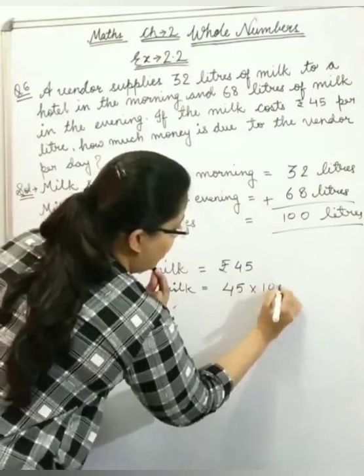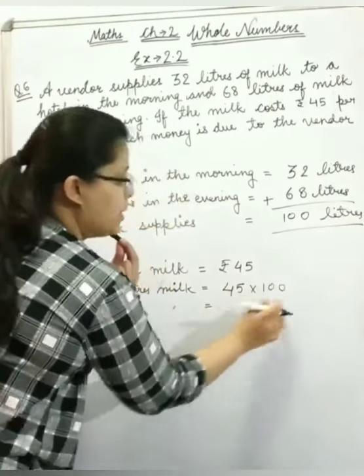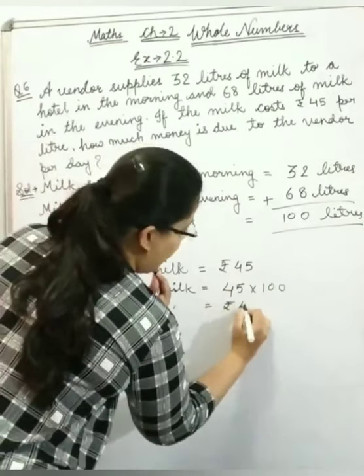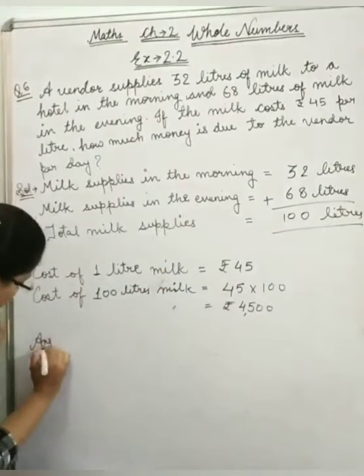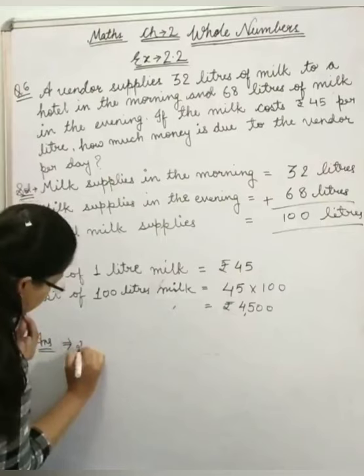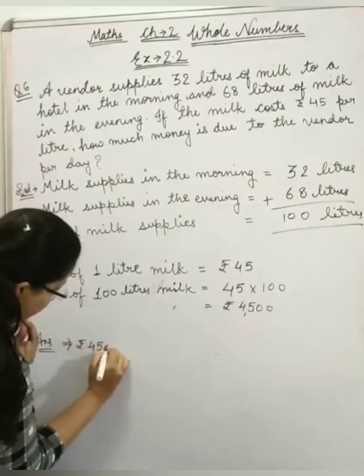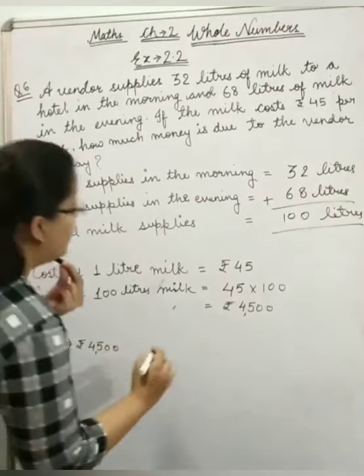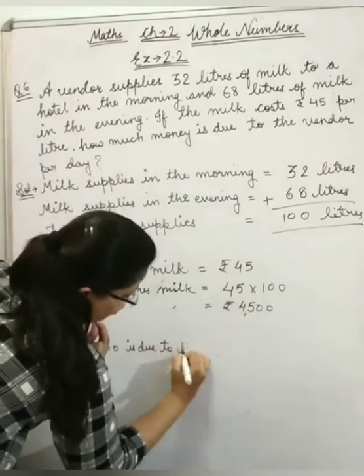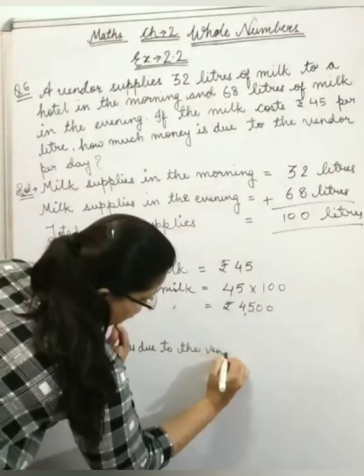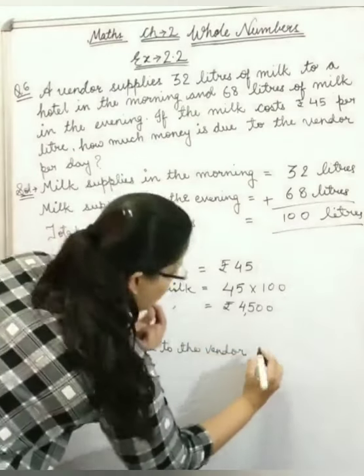So my answer is 4,500. Answer: rupees 4,500 is due to the vendor per day.